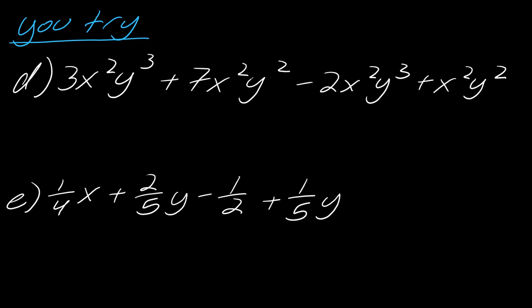Looking through this, I've got 3x²y³ and -2x²y³. So that's going to leave me with just x²y³. If you put the 1 in front, that's fine, it's just not necessary, so I don't usually write it. And then we've got the 7x²y² and the x²y², and this has an invisible 1, so it's really 7 plus 1. So this is plus 8x²y². And then that's it for that one.